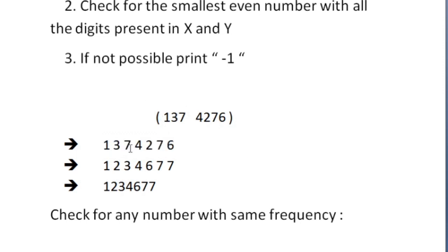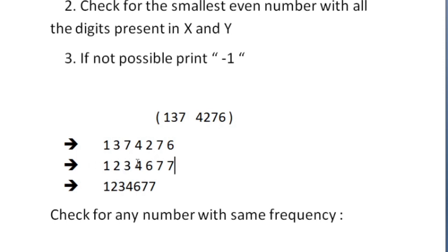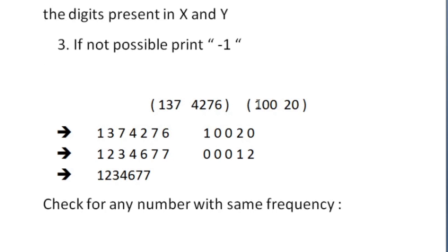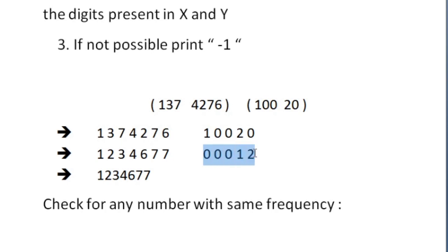The array contains the digits of x and y: 1, 3, 7, 4, 2, 7, 6. Now we have to find the smallest, so we are going to sort this array. After sorting, this is how our new array looks. We are then going to convert the array elements into an integer, and this would be the smallest possible integer formed using the digits of x and y.